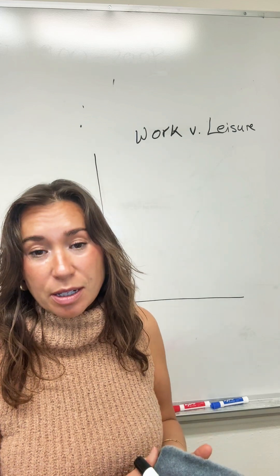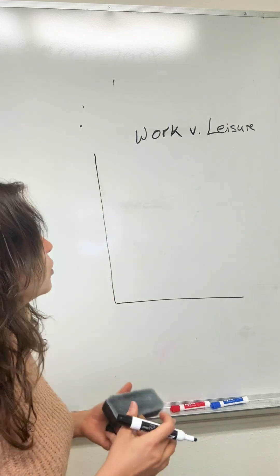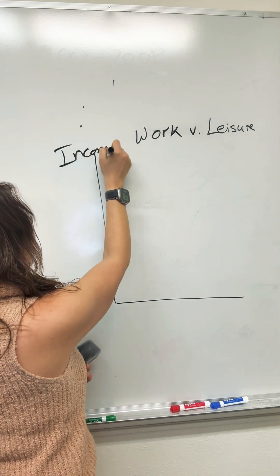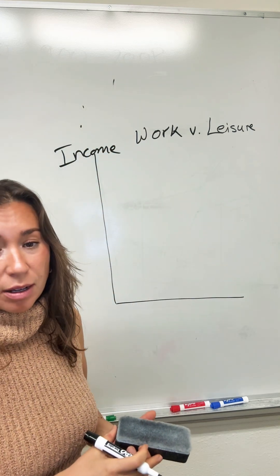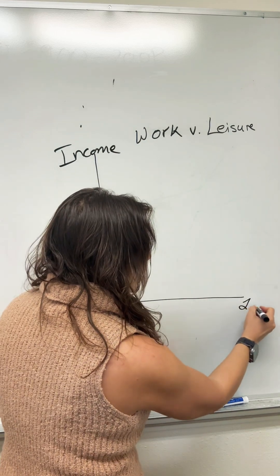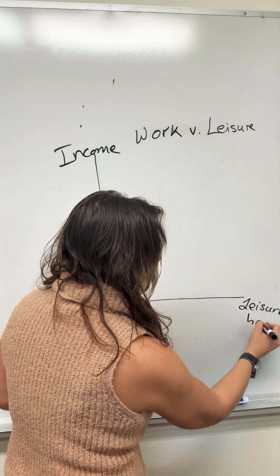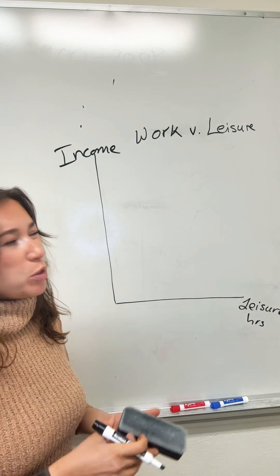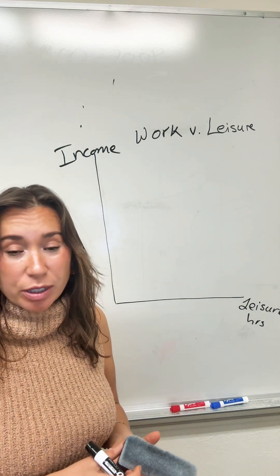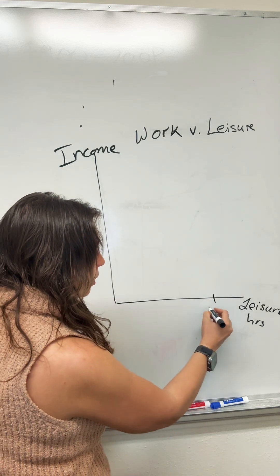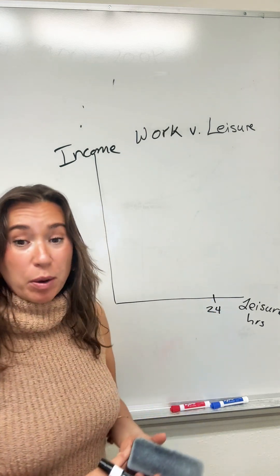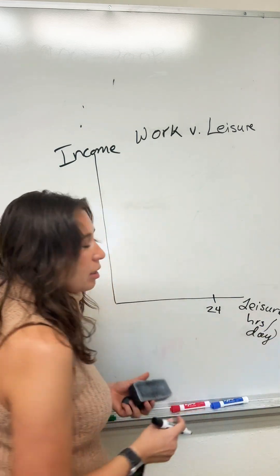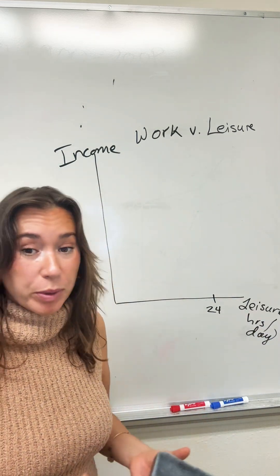The way we address this is using a leisure-labor diagram, with typically income on the y-axis and leisure hours on the x-axis. If you spend all your time in leisure, at most — because we're on planet Earth — you can have 24 hours of leisure. We're really talking about per day, though we could talk about per week or per month.